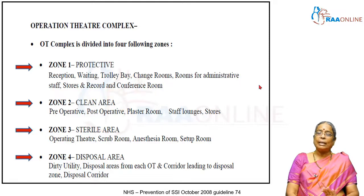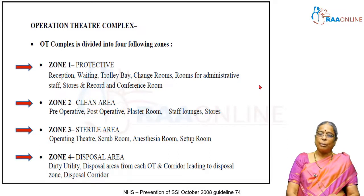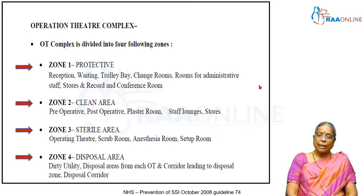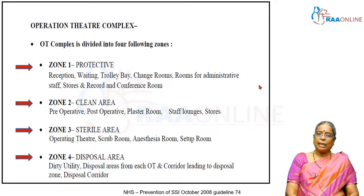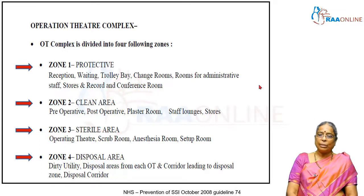Zone two is a clean area — not an ultra-clean area, but a clean area — which consists of the preoperative holding area, the postoperative holding area, the plaster room, the staff lounges, and all those things. Zone three is the sterile area, the most sterile area, which consists of the operating theater, the scrub rooms, the anesthesia room, and the setup room. Zone four is the unsterile area, which is the disposal area where you have the dirty utility, the disposal corridor where you dispose of things from each OT — the corridor leading on to the disposal zone. So all this is zone four.